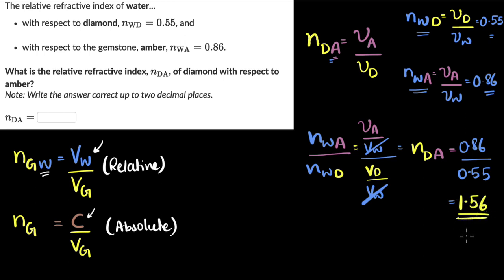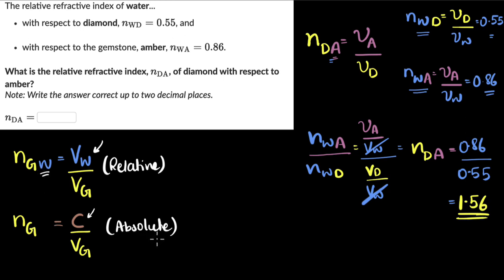So do you have to remember special formulas to solve these kinds of problems? No. You just have to remember the basics. The refractive index of glass with respect to water is the speed of light in water — whichever medium you're measuring with respect to comes on top — divided by the speed of light in glass. That's relative refractive index. When measuring relative to vacuum, we call it absolute refractive index, and the speed of vacuum comes on top. The number is a measure of how much light slows down in that medium compared to the other.